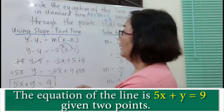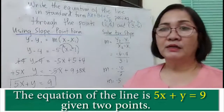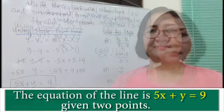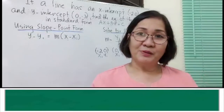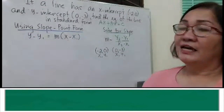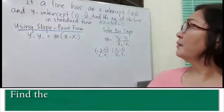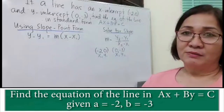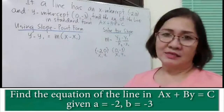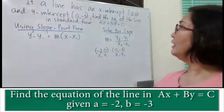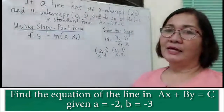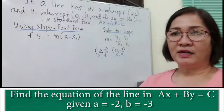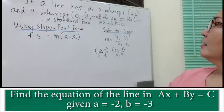So therefore, 5x plus y equals 9 is the equation of the line given two points. Another example: if a line has an x-intercept of (negative 2, 0) and a y-intercept of (0, negative 3), find the equation of the line in standard form ax plus by is equal to c.